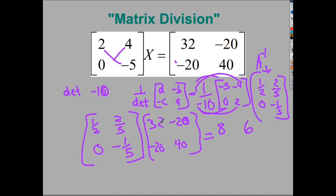0 times 32 is 0. Negative 1 fifth times negative 20 gives you positive 4. And then I would just do the 0 again over here, and the negative 1 fifth times 40 gives you negative 8. So, that's how you'd set it up, and it would work out to where you could get the answer.